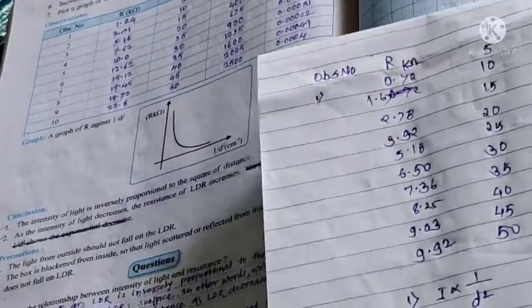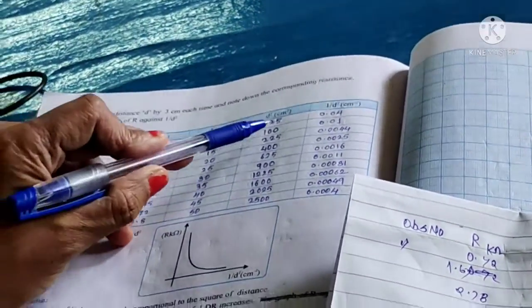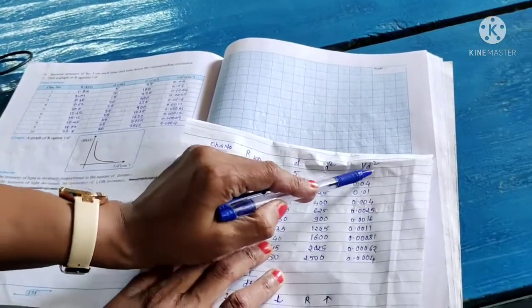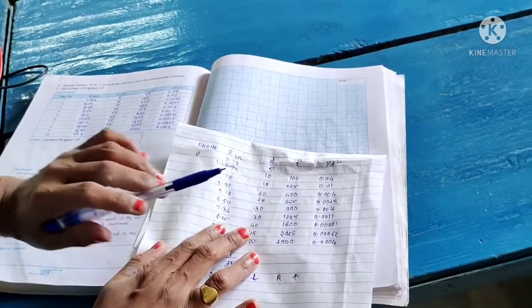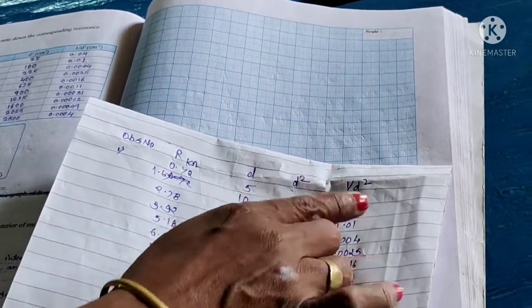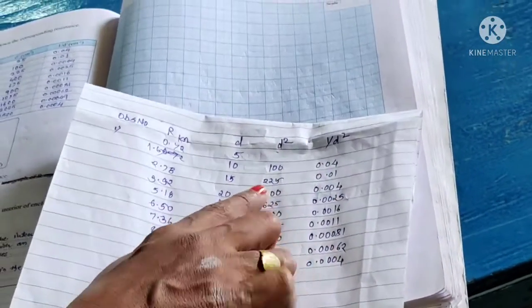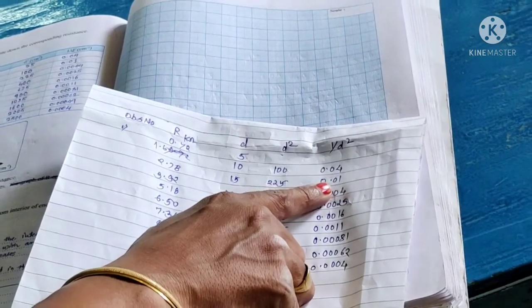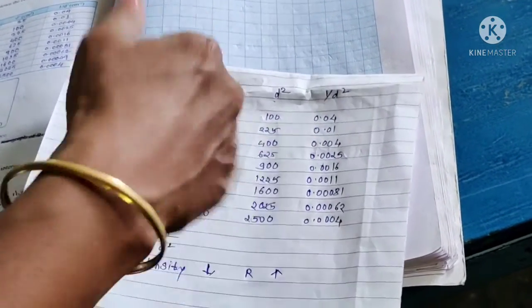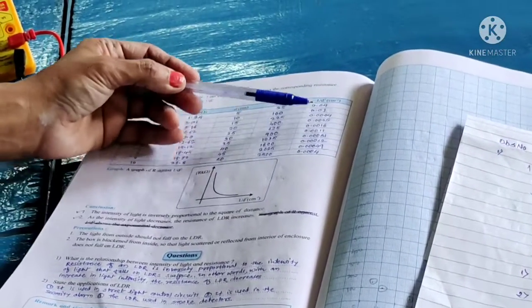Next column you have to complete, D square. Now 1 upon D square. The calculation: D square and 1 upon D square, the calculation part is complete.